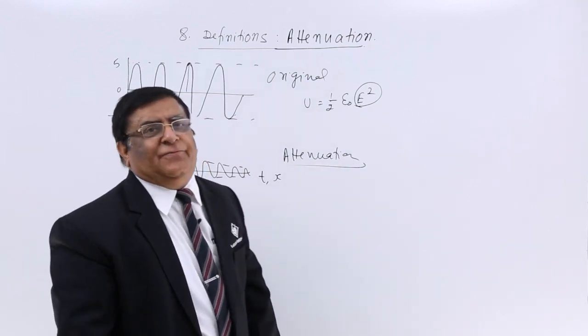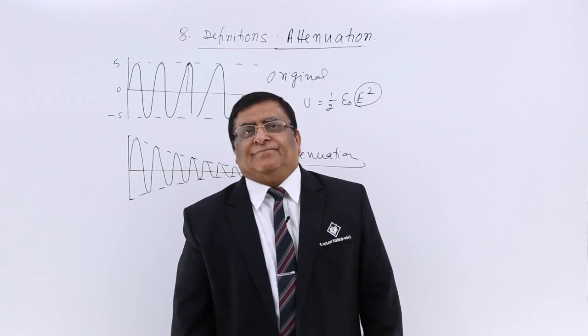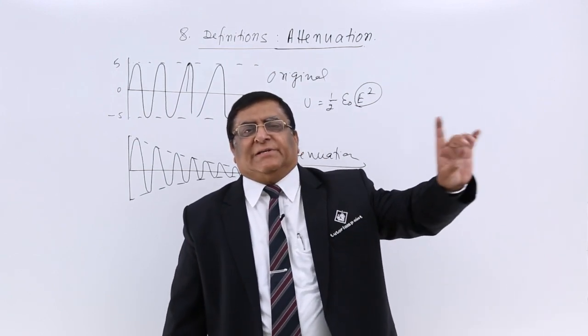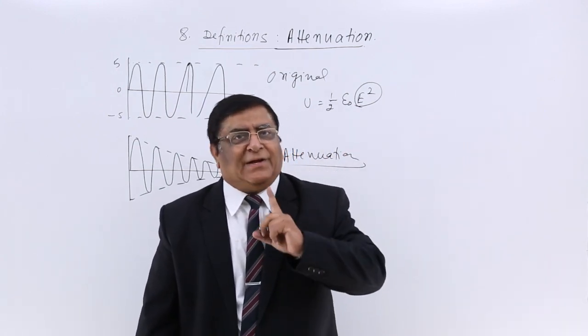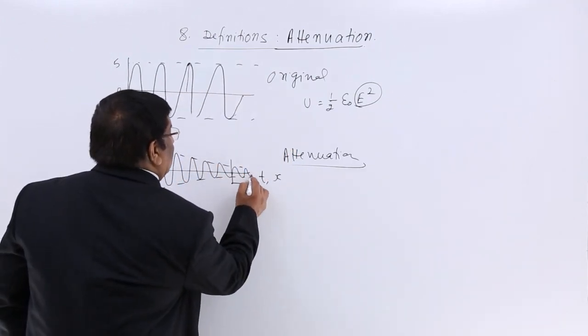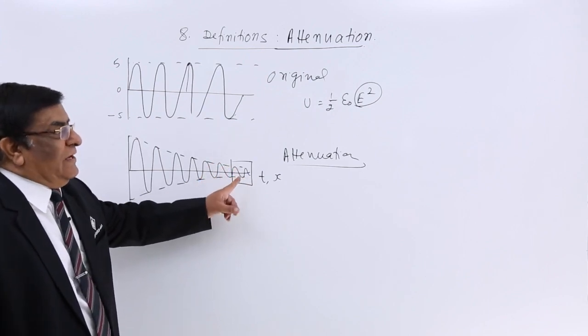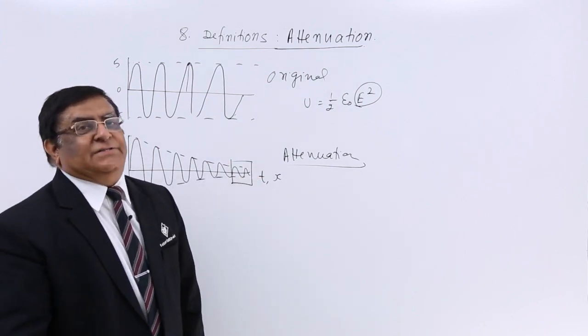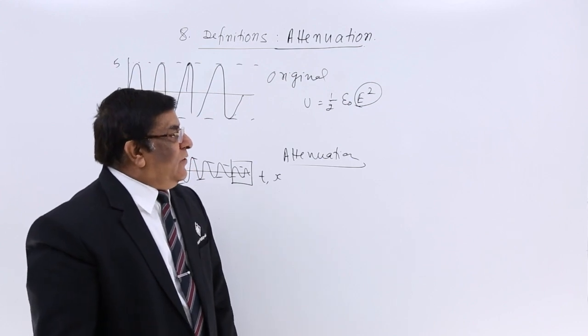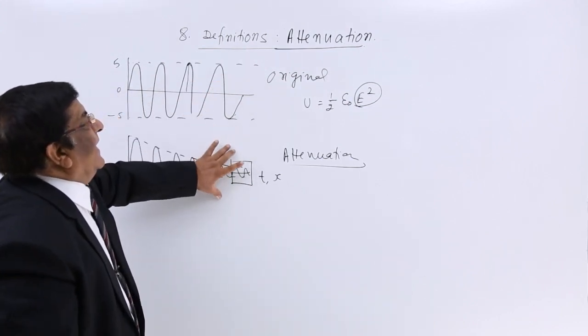It is a very natural phenomenon. We cannot prevent it while transmitting, but we can do one thing: we can give it strength here when it has become weak. We will come to that when we are studying repeaters. This is attenuation.